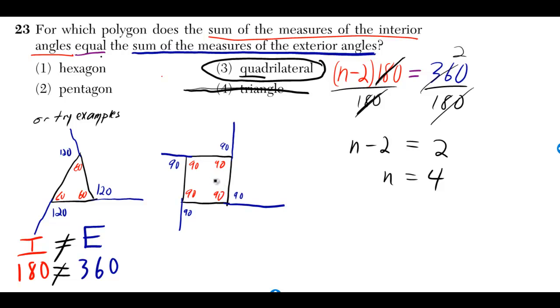Then an easy quadrilateral to analyze is a rectangle where all the interior angles are 90. So the sum of the interior is 90 times 4 which is 360.